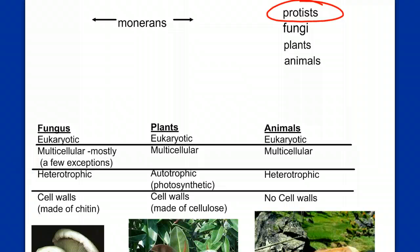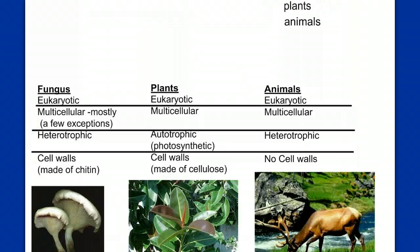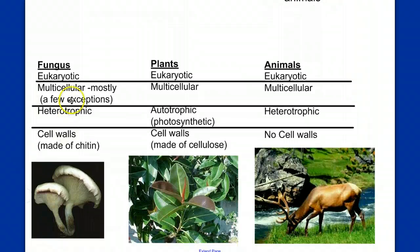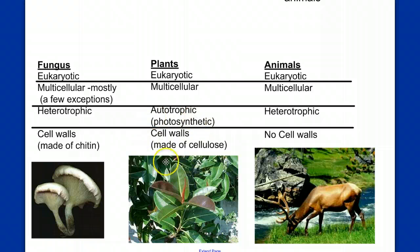Fungus, plants, and animals are easy to define. If you have these characteristics — multicellular, heterotrophic, cell walls made of chitin — you're a fungus. If you're multicellular, photosynthetic, and have cell walls made of cellulose, you're a plant. And if you're multicellular, heterotrophic, and lack cell walls, you're an animal.